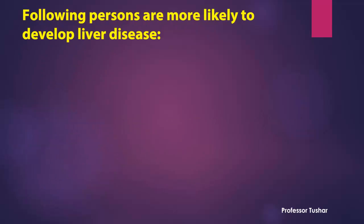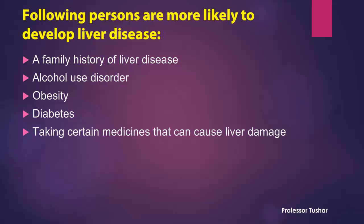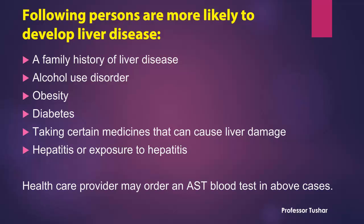The following persons are more likely to develop liver disease: a family history of liver disease, alcohol use disorder, obesity, diabetes, taking certain medicines that can cause liver damage, and hepatitis or exposure to hepatitis. A healthcare provider may order an AST blood test in the above cases.